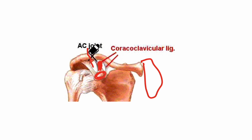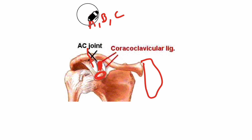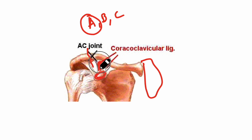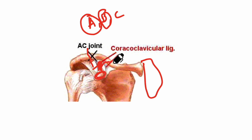Group 2 fractures are subdivided into types A, B, and C. In type A the fracture occurs and the coracoclavicular ligament is intact. In type B the coracoclavicular ligament is ruptured. In type C there is intraarticular extension into the acromioclavicular joint.